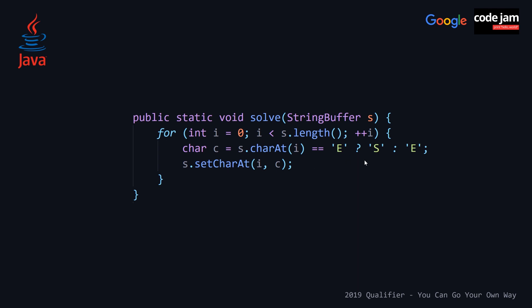We loop through each of the indexes in our string, and then we set a local variable using the ternary operator by checking what the character at index i is. If it's equal to 'E', we want our replacement character to be 'S'; otherwise we want the replacement character to be 'E'. Then we just set the character at that corresponding index to c — a very imperative way of solving it.